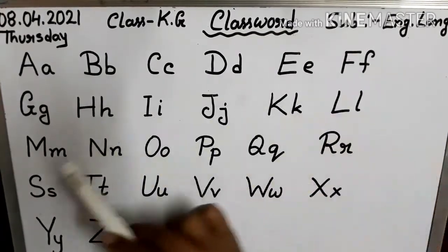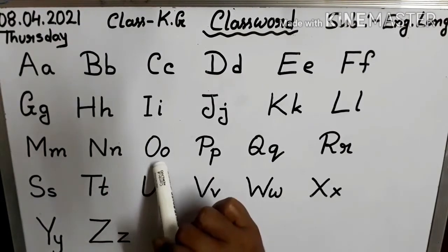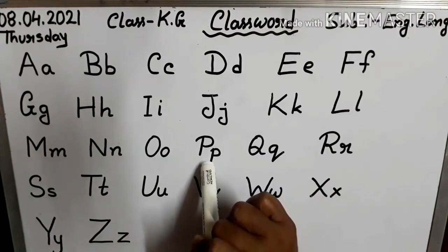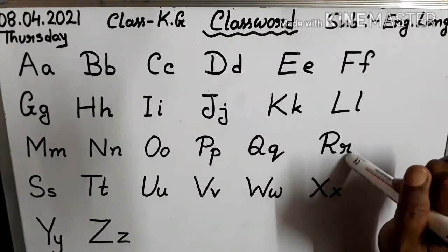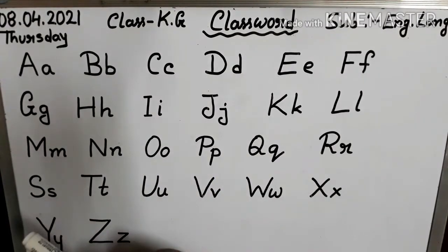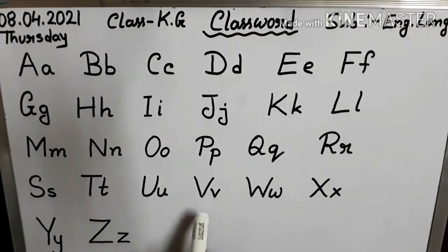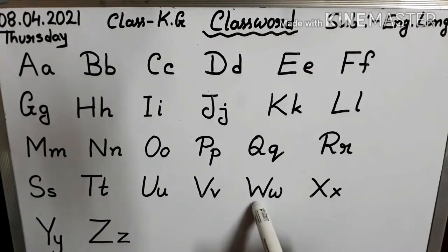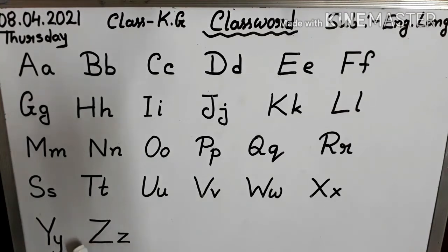Capital L, small l. Capital M, small m. Capital N, small n. Capital O, small o. Capital P, small p. Capital Q, small q. Capital R, small r. Capital S, small s. Capital T, small t. Capital U, small u. Capital V, small v. Capital W, small w. Capital X, small x. Capital Y, small y. Capital Z, small z.